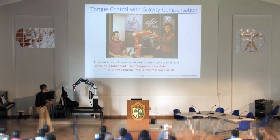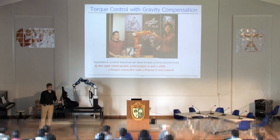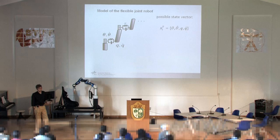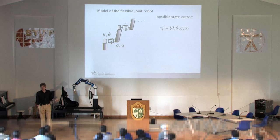As Neville mentioned yesterday, in the rigid robot model it's hard to do force control because the joint torque is not a state. Joint torque is something related to accelerations, and accelerations are not a state of the system — they are related to the derivative of the state. Strictly speaking, a torque controller with a P-term is not causal for a rigid robot.